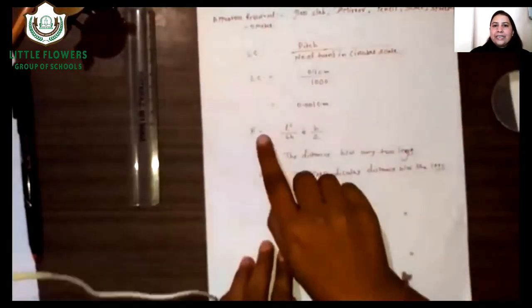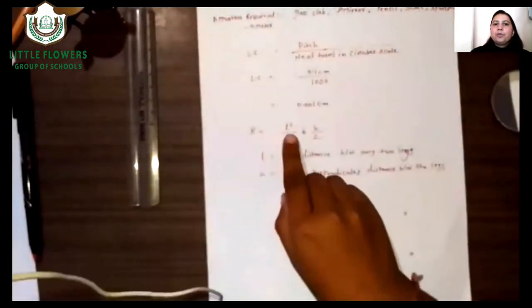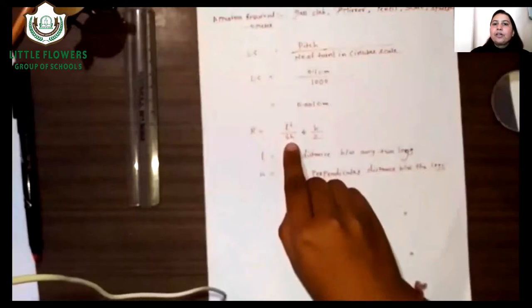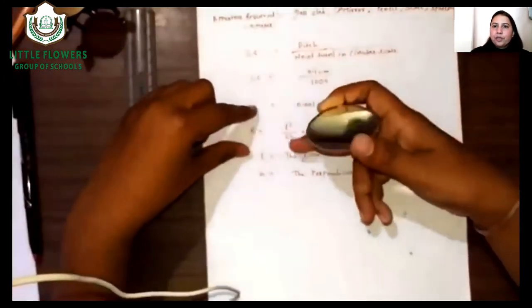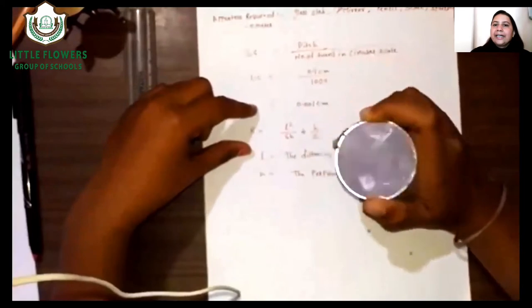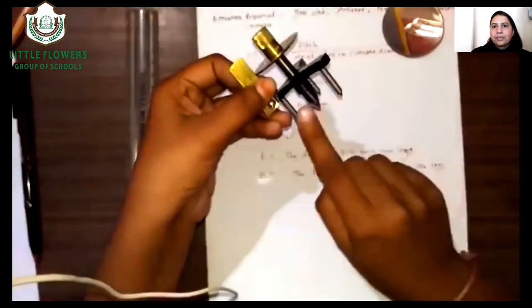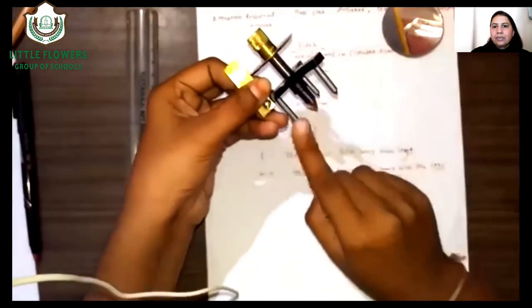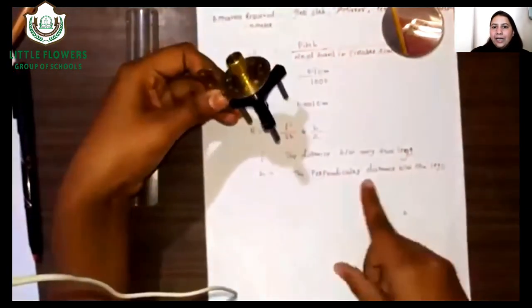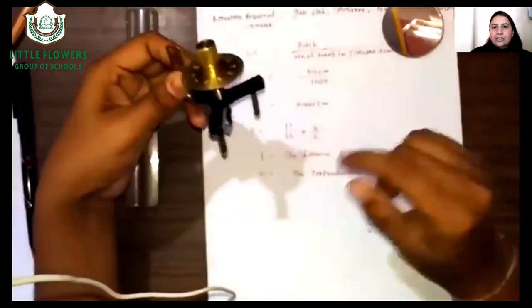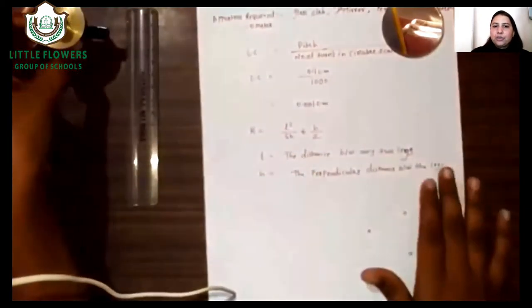After knowing the least count, let us move on to the radius of curvature. For finding the radius of curvature, we require the formula: R = L² / (6H) + H/2. Here, L is the distance between any two legs of the spherometer, and H is the perpendicular distance between the legs and the surface, which we need to find.